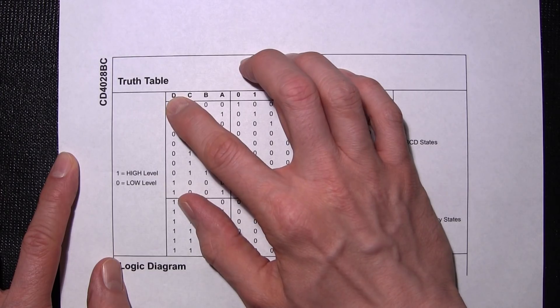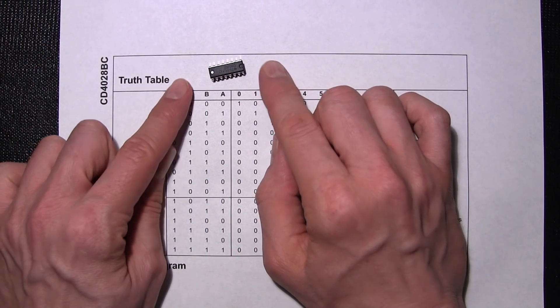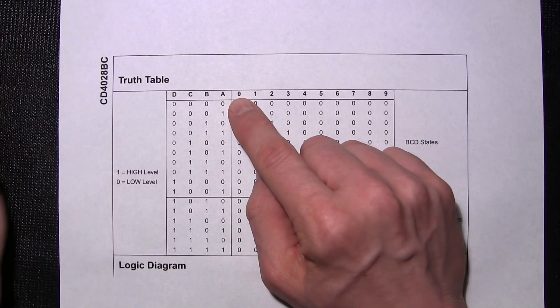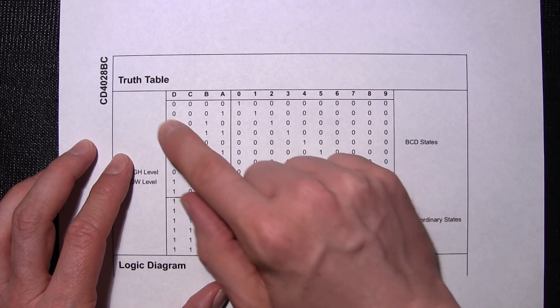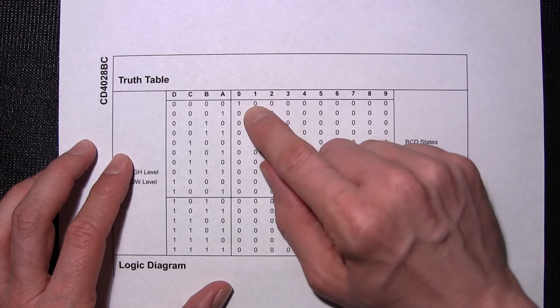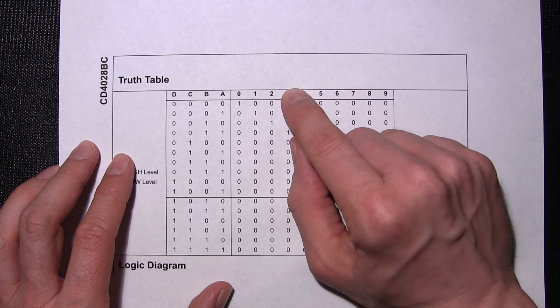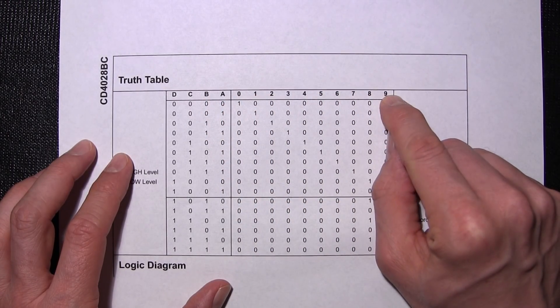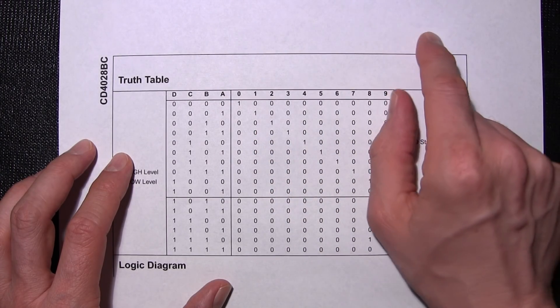So these here, D, C, B and A are actually pins assigned on this IC and we'll take a look at the pin assignment quite shortly. And these are the outputs on the actual IC, so if we give it a certain string of binary, it will illuminate the number 1 or the number 2 or the number 3. So picture these as being light bulbs. So we have 10 light bulbs here. Each light bulb has a number on it, 0 through 9.